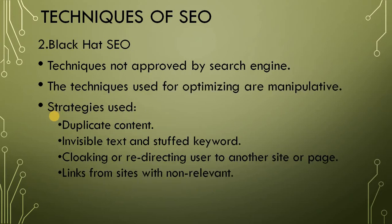The next type is Black Hat SEO. These techniques are not approved. The techniques used by Black Hat are manipulative techniques — there are manipulative techniques which can be used for optimizing, and these come under Black Hat SEO. Black Hat SEO targets the search engine; they basically look at how the search engine increases ranking and use strategies related to that. For example, since we know that keywords help a website rank higher, a Black Hat practitioner will stuff keywords throughout the webpage — repeating the keyword so many times. Using a keyword that many times is called keyword stuffing, which is not at all advisable. This is a wrong practice.